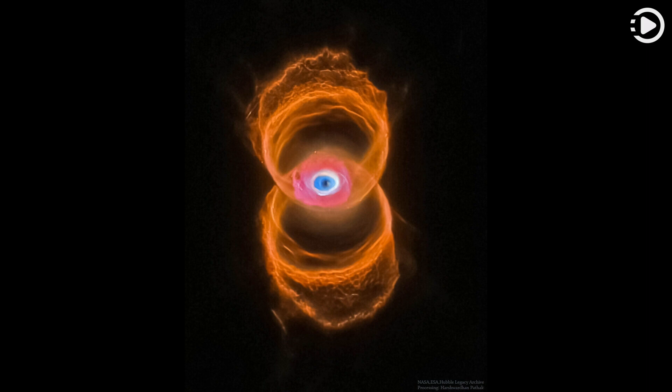The unprecedented sharpness of the Hubble images has revealed surprising details of the nebula ejection process that are helping to resolve the outstanding mysteries of the complex shapes and symmetries of planetary nebulas like MyCN18.